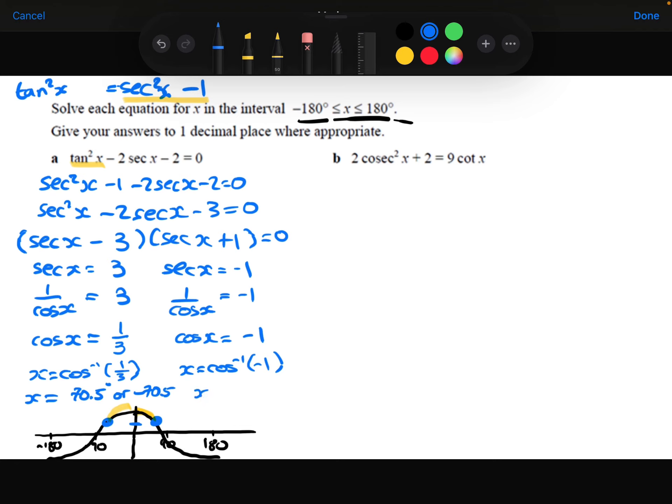And then for the second solutions, the cos inverse of minus 1 is either 180, which is here, here's the minus 1, or over here at minus 180. So those are the four solutions to part A.